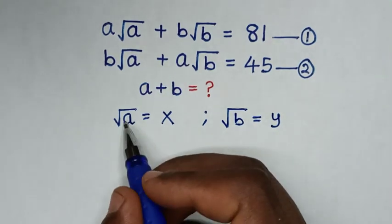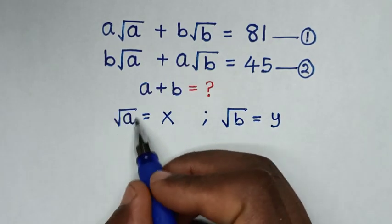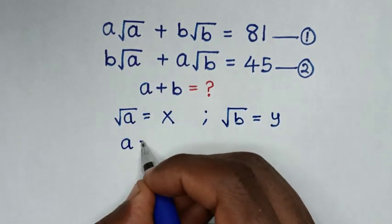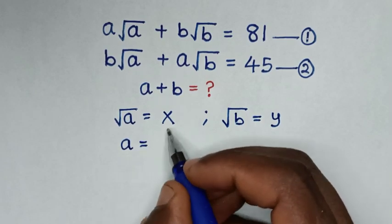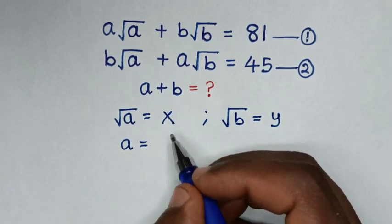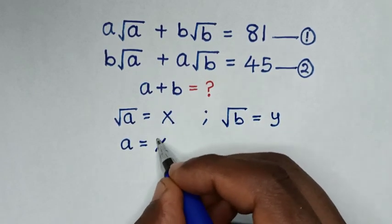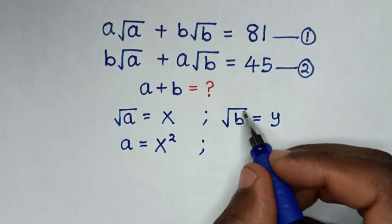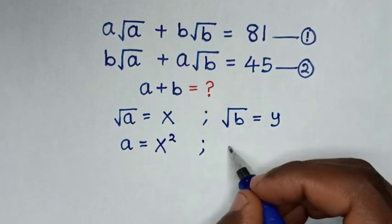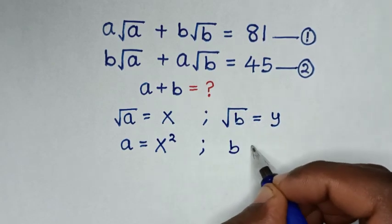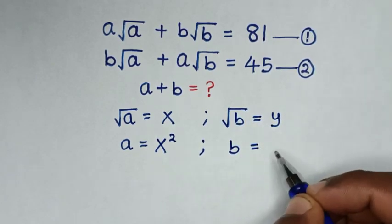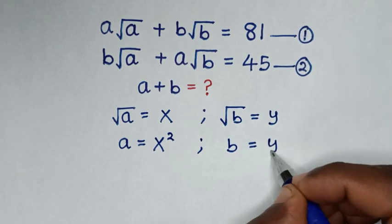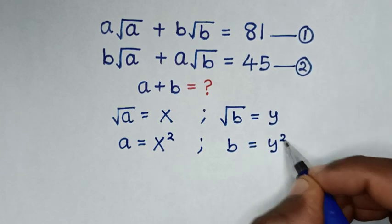When we square square root of a, it gives a is equal to x squared. And when we square square root of b, it gives b is equal to y squared.